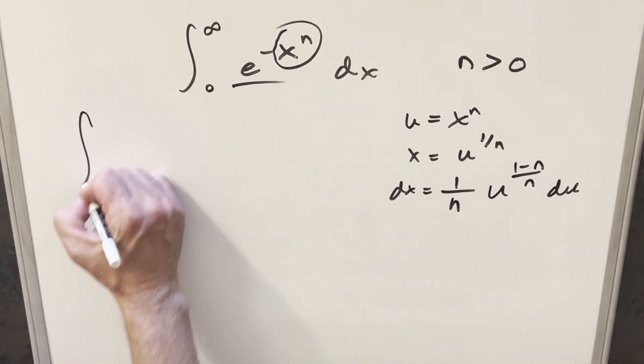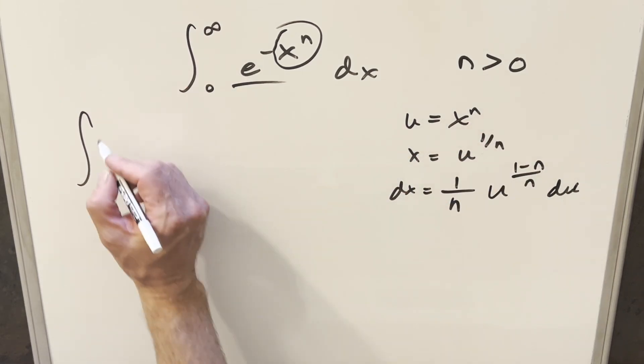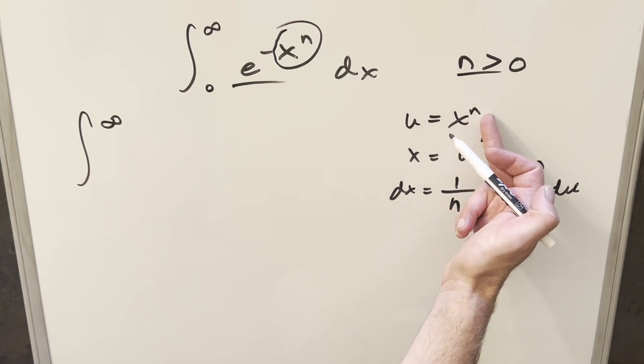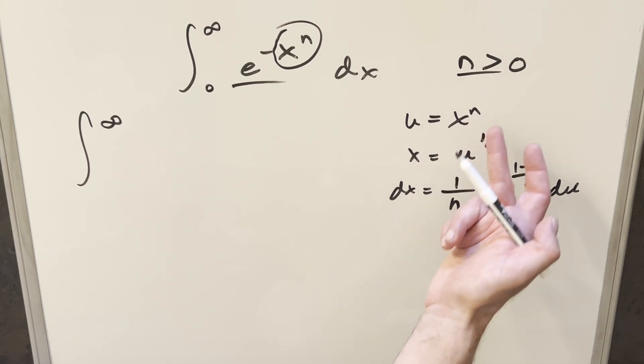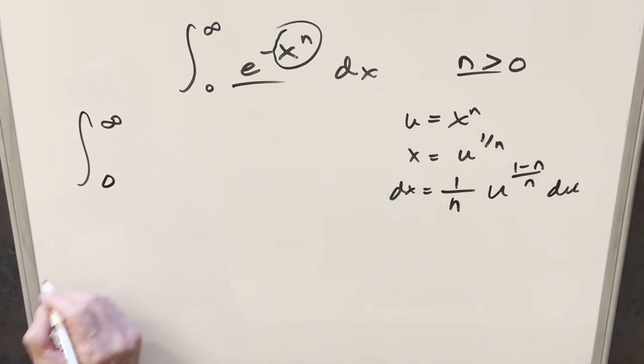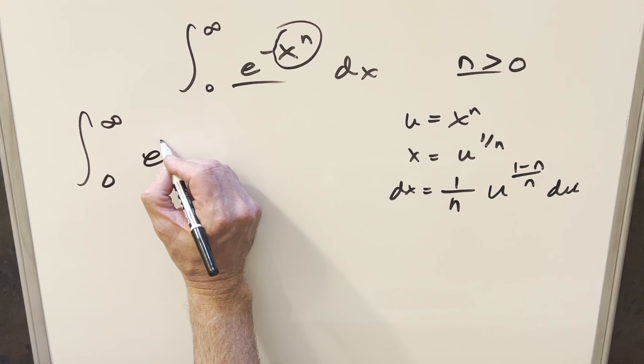Now we'll substitute this. First, taking infinity and plugging it in here: infinity to the n is just infinity. That's where the condition is important, because if n were negative, it wouldn't be infinity anymore, it would go to 0. Plugging in 0 here gives 0 for the lower bound. This term becomes e^(-u).